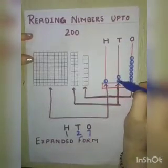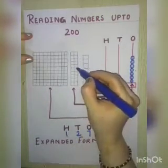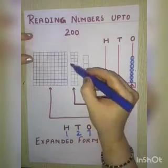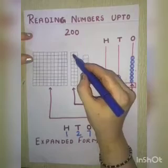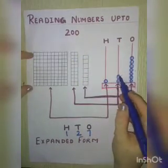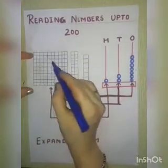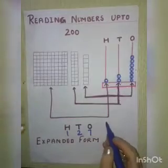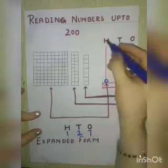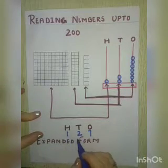At the 10's place we are having 2 beads, and here we are having 20 small blocks. So 20 blocks means 2 tens. And the same — 1 bead at the 100's place means 100 blocks. So here at 1's place 7, 10's place 2, and 100's place 1.